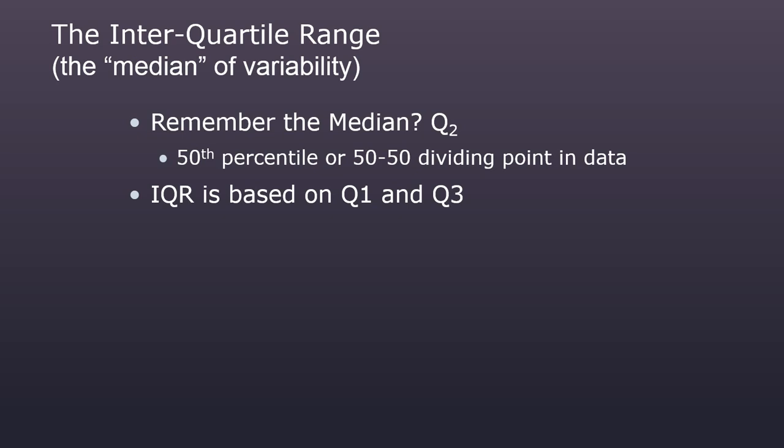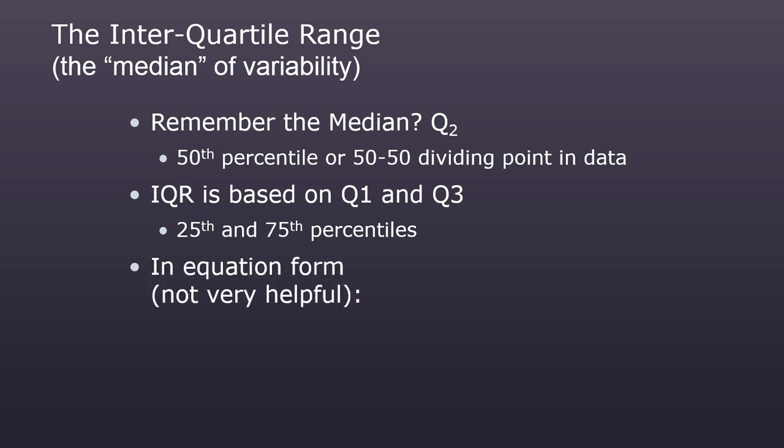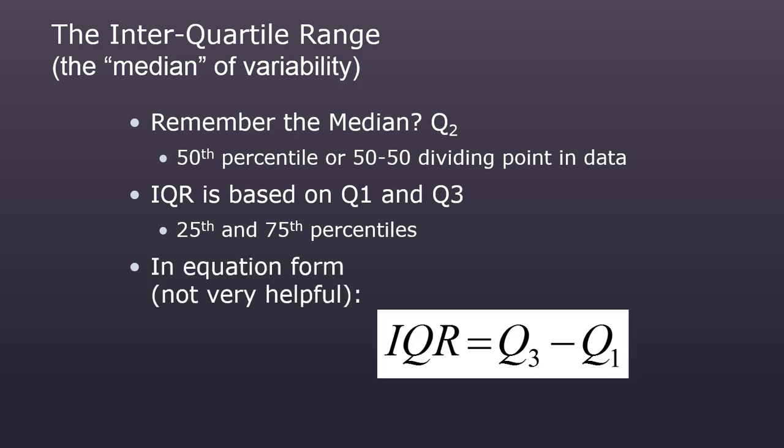The IQR is based on Q1 and Q3, which are on either side of the median. So if you remember what the median is and how to calculate it, then it's fairly easy to at least conceptualize what's going on with the IQR. So Q1 and Q3 are the 25th and the 75th percentiles. That's another way to think of them. They divide the lower 25 percent and the upper 25 percent from the rest of the data.